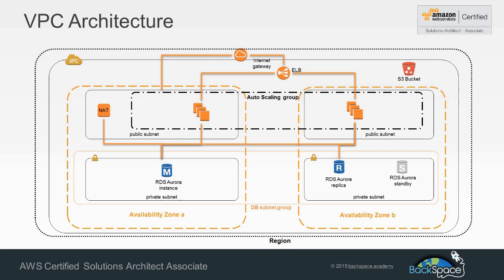To allow those databases to get updates through to the internet, we're going to have a NAT instance that will connect up through to an internet gateway. Our internet-facing traffic will be handled through an elastic load balancer that will distribute traffic across an auto scaling group of EC2 instances containing our WordPress application. We'll also have an S3 bucket for static assets and latest code to bootstrap into our instances on startup, connecting into our VPC through an S3 VPC endpoint, which is a new feature of VPC.